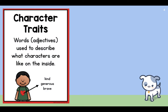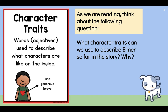Our other objective is about character traits. Character traits are words or adjectives used to describe what characters are like on the inside. Examples of character traits are kind, generous, and brave. So as we are reading today, I want you to think about the following question: what character traits can we use to describe Elmer so far in the story, and why? Let's make sure we're thinking about that as we're reading.